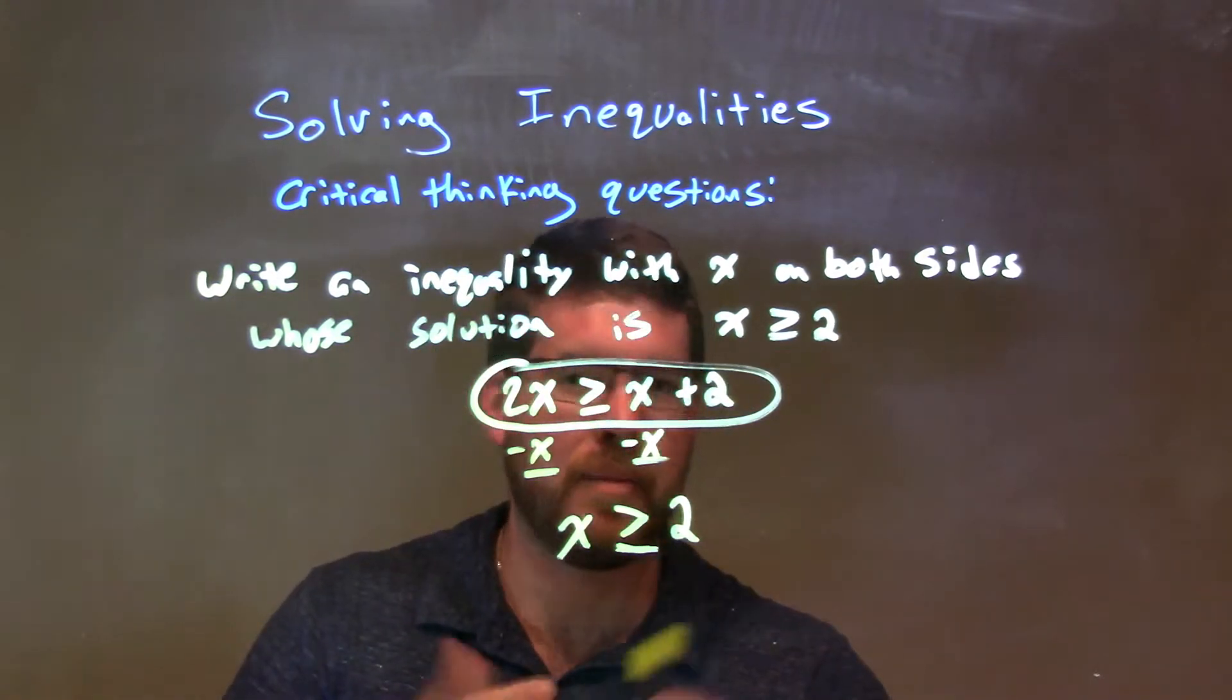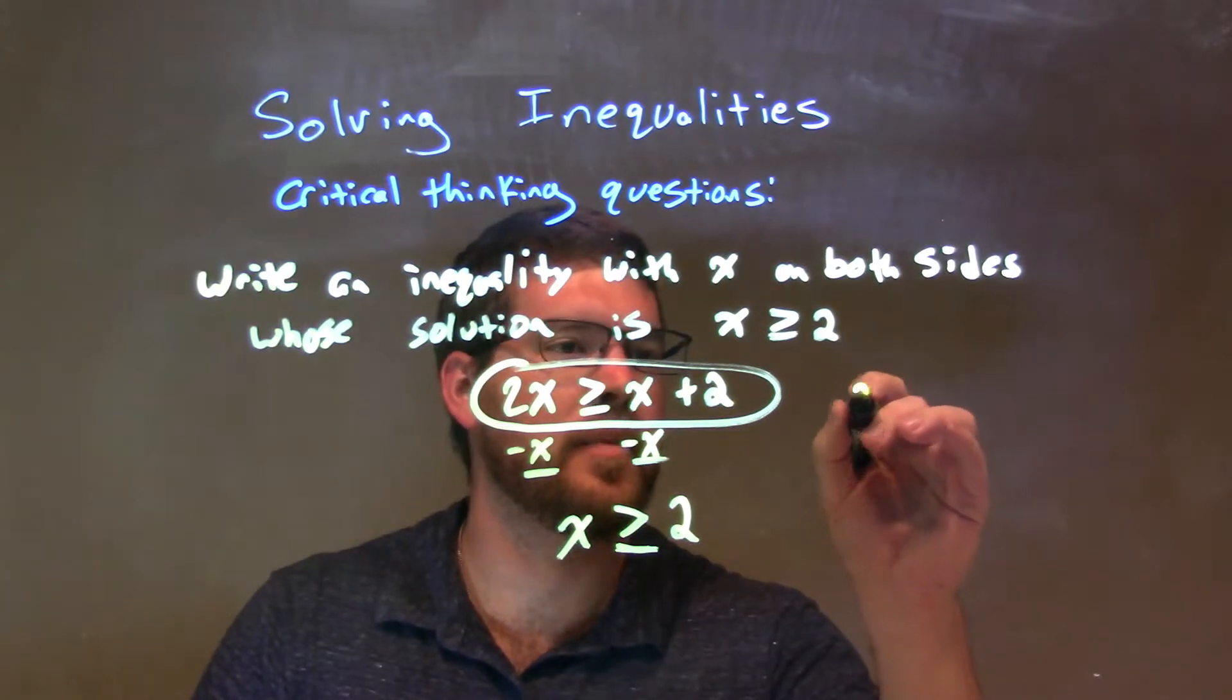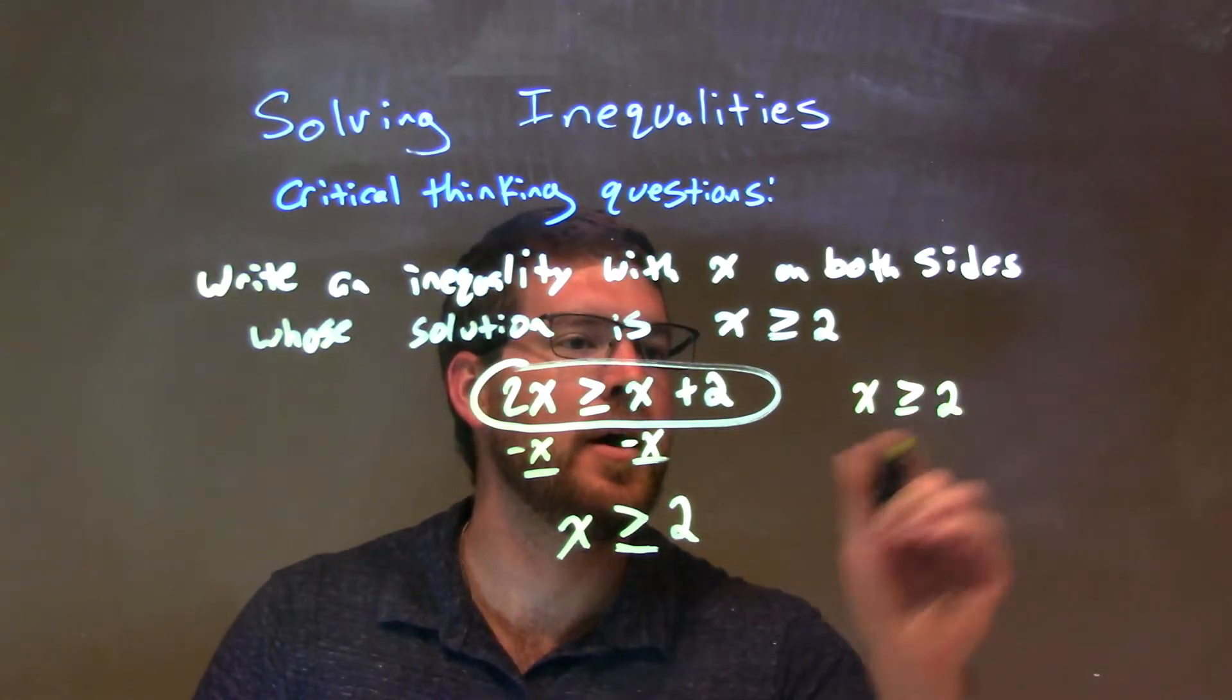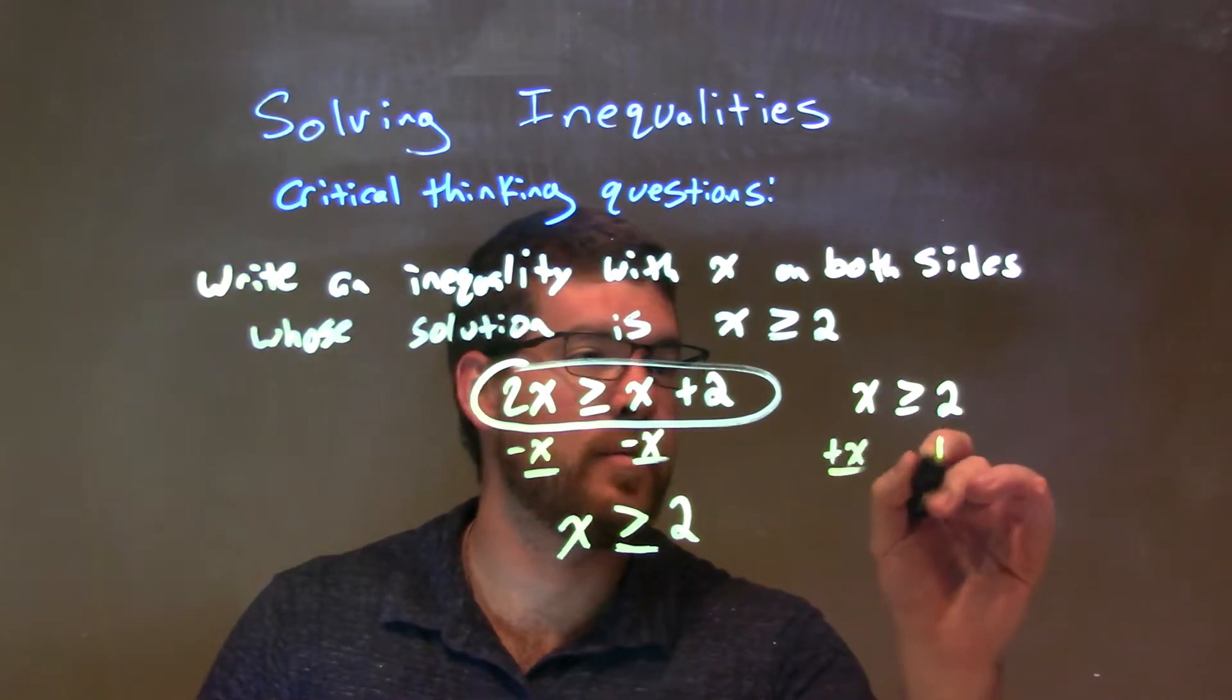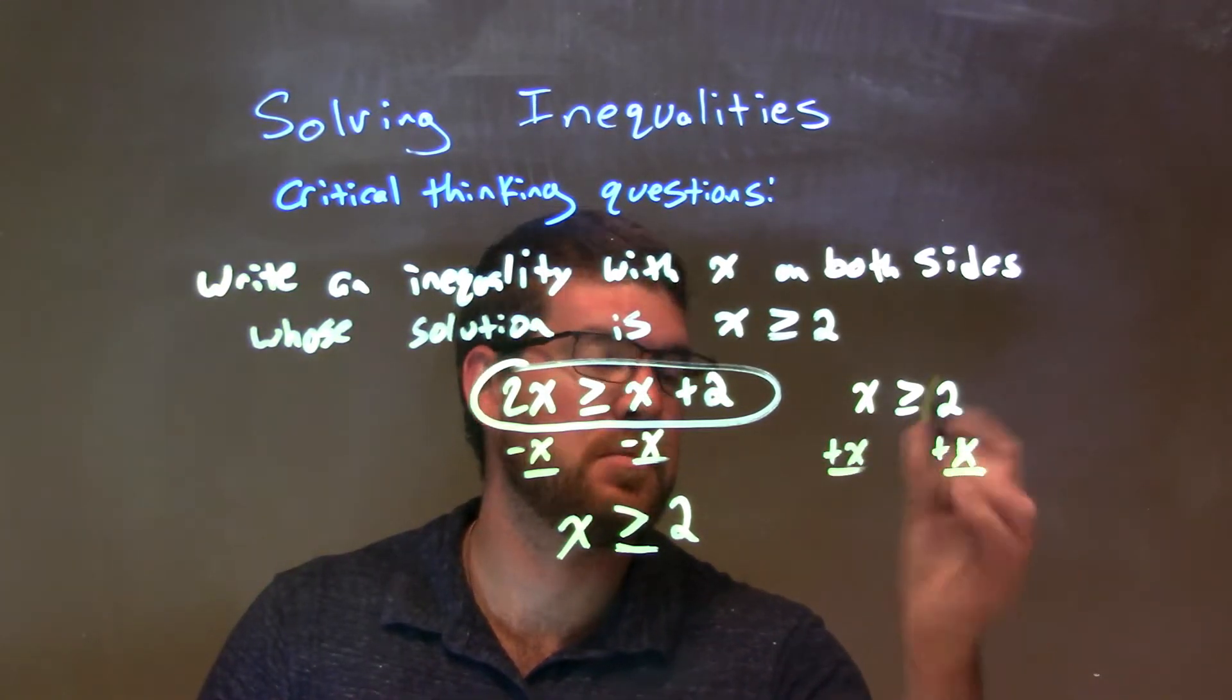If I did want to work backwards, this is another way to talk about it. x is greater than or equal to 2. Since I have to have an x on both sides, let's just add an x to both sides, like this.